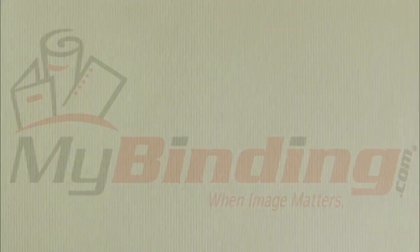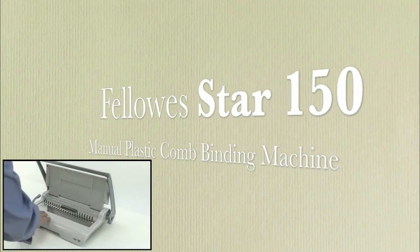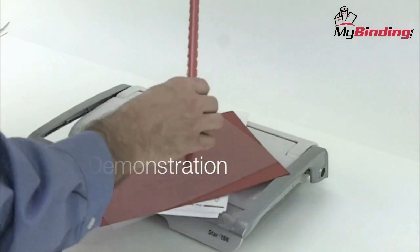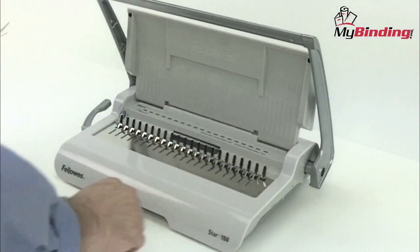Welcome to MyBinding video. Today we're looking at the Fellowes Star 150, a manual plastic comb binding machine. Designed for the home or small office, this all-in-one comb binding system is a great little machine. Let's watch it step-by-step as we make a book.